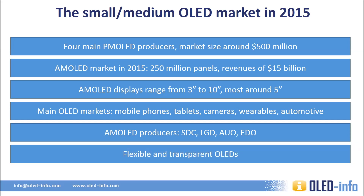Flexible and transparent OLEDs are entering the market. Both Samsung and LG produce flexible plastic-based AMOLED panels, and these are adopted in smartphones — for example Samsung's Galaxy S6 Edge with its curved plastic screen — and also in Apple's watch. Small size flexible passive matrix OLEDs are also being introduced. Transparent OLEDs, while easier to fabricate than flexible ones, are only now entering the market. Currently, the largest transparent OLED available is about 2.4 inch in size, or up to 4 inch for segmented displays.